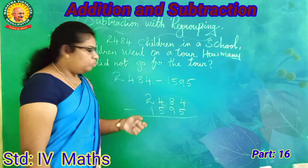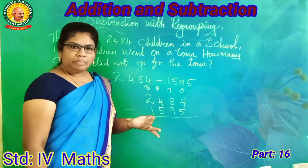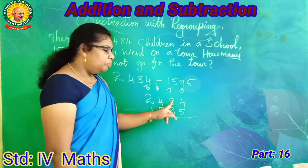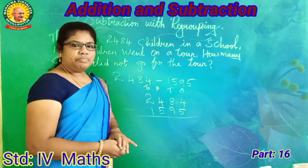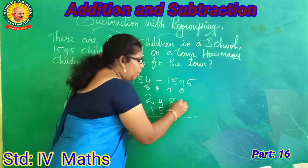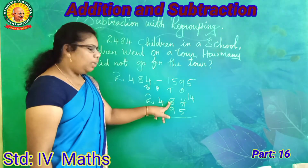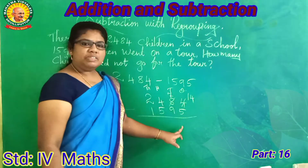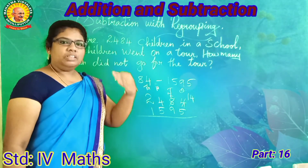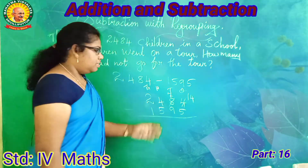We start to subtract from the ones. Look at the ones: 4 and 5. 4 is smaller than 5, so we have to borrow from the tens. Tens had 8, borrow 1, so ones become 14. 14 minus 5: counting 5 after 6, 7, 8, 9, 10, 11, 12, 13, 14 — that gives 9.